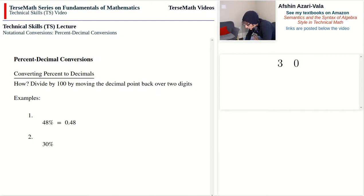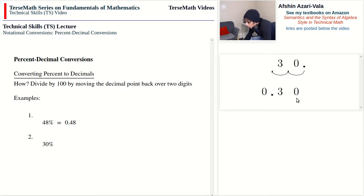Problem number two: we have 30%. We place the decimal point on the right end of 30 and move it back over two digits, because percent means divide by 100. That gives us 0.30. We add a zero on the left. As for the trailing zero on the right — if the value is exact you can drop it and write 0.3, but if the value is measured the zero may indicate a higher level of accuracy. We'll discuss that later in the measurement systems videos.